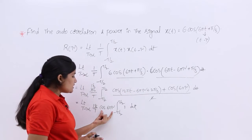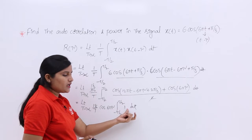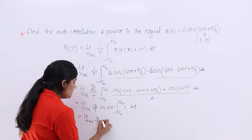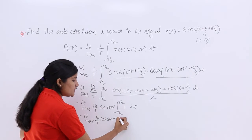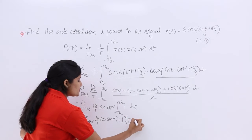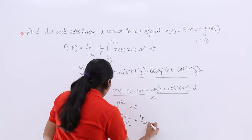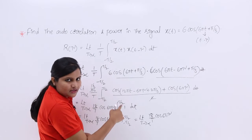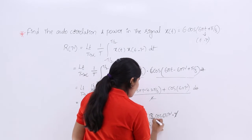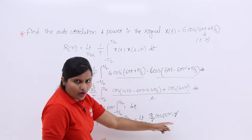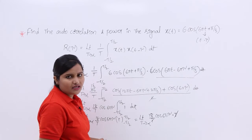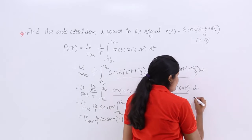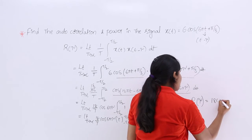Writing limit T→∞ (18/T) · cos(6πτ) · ∫ from −T/2 to T/2 of 1 dt. Evaluating the integral of 1 dt from −T/2 to T/2 gives T. So (18/T)·T = 18, and the limit as T→∞ vanishes because there are no remaining T terms.